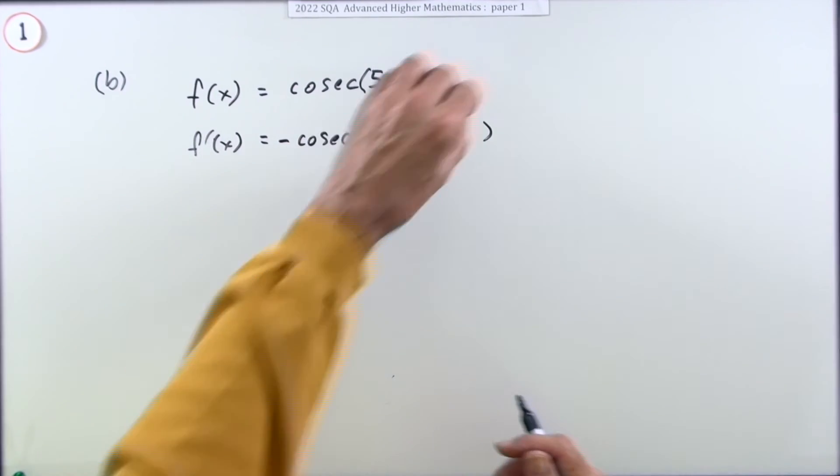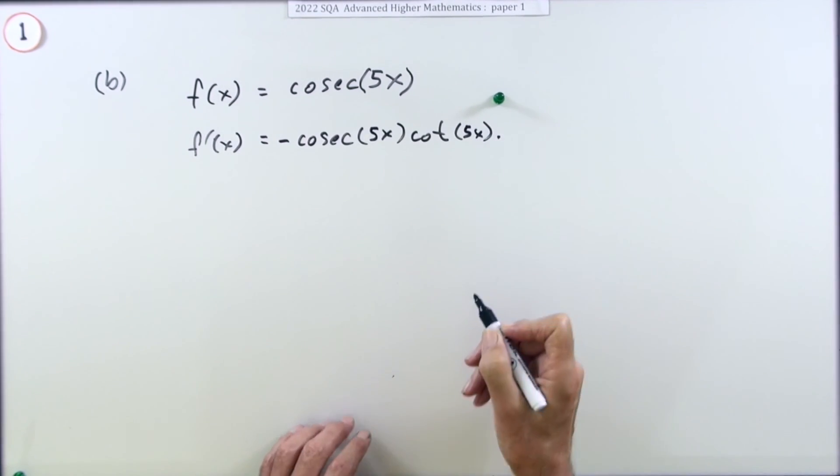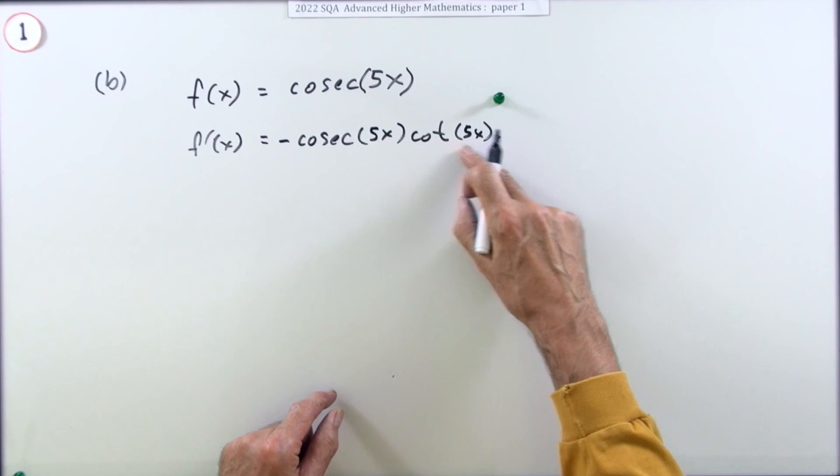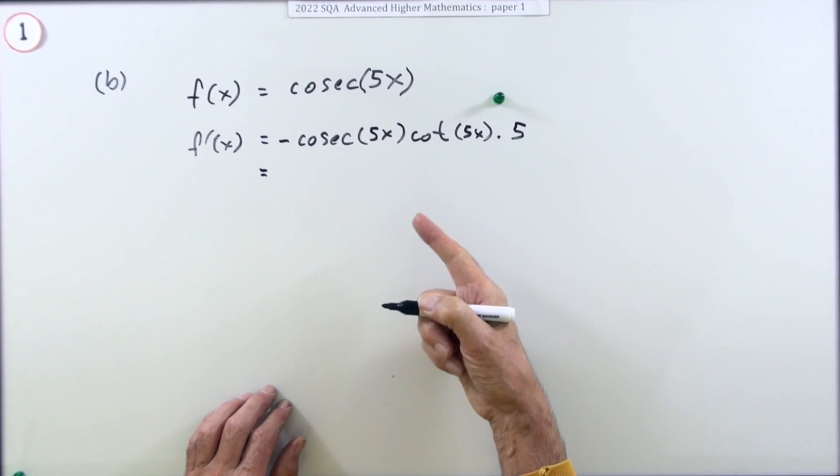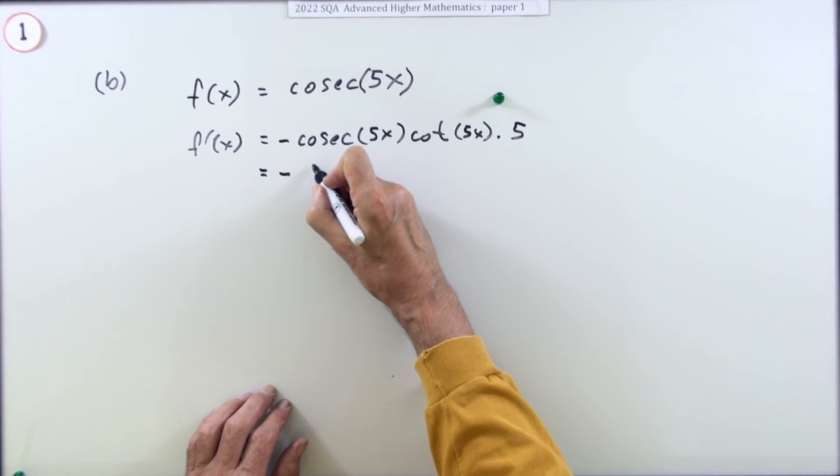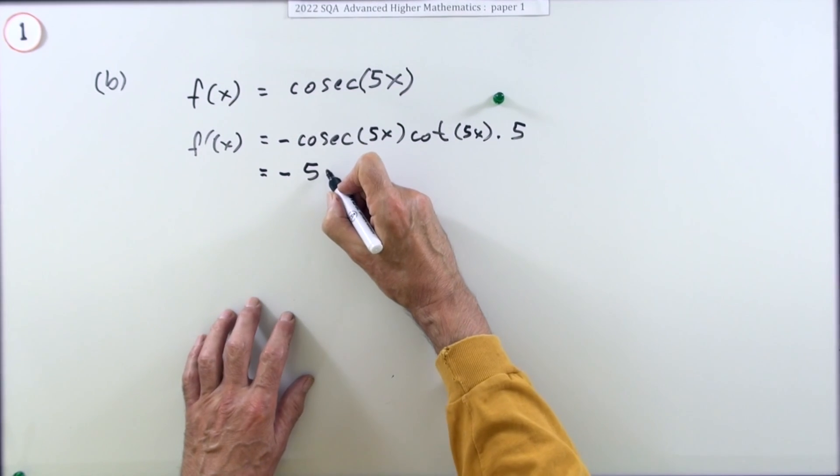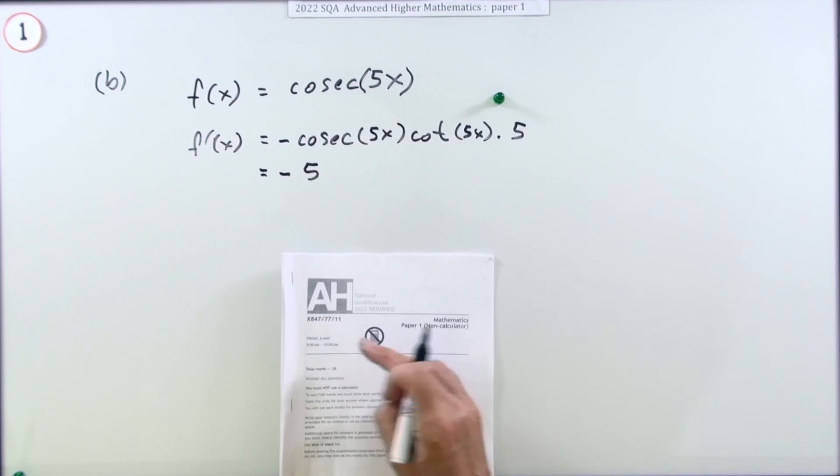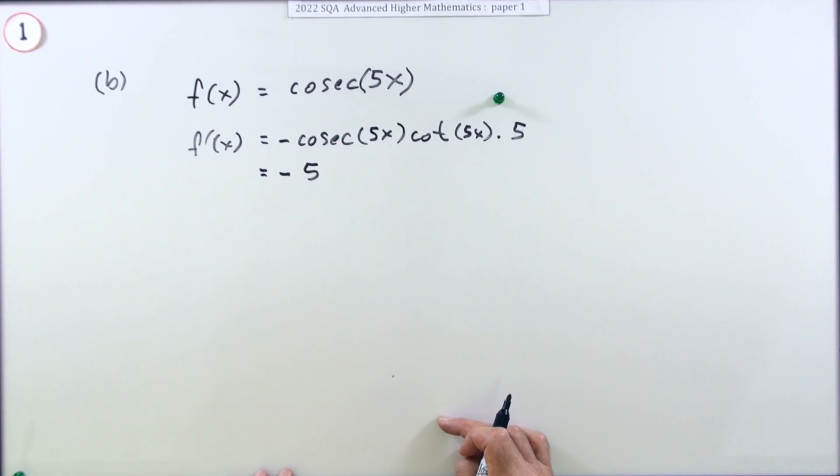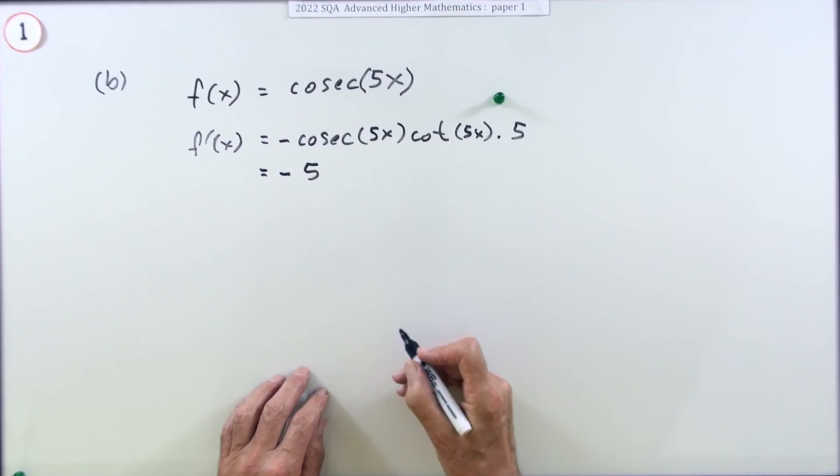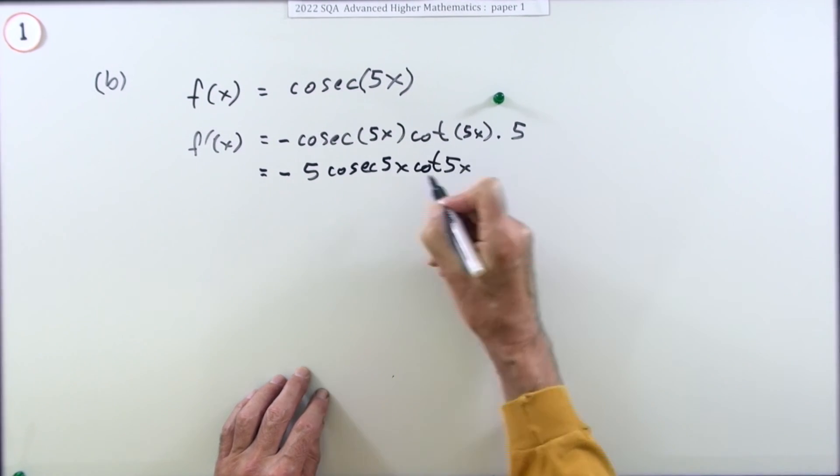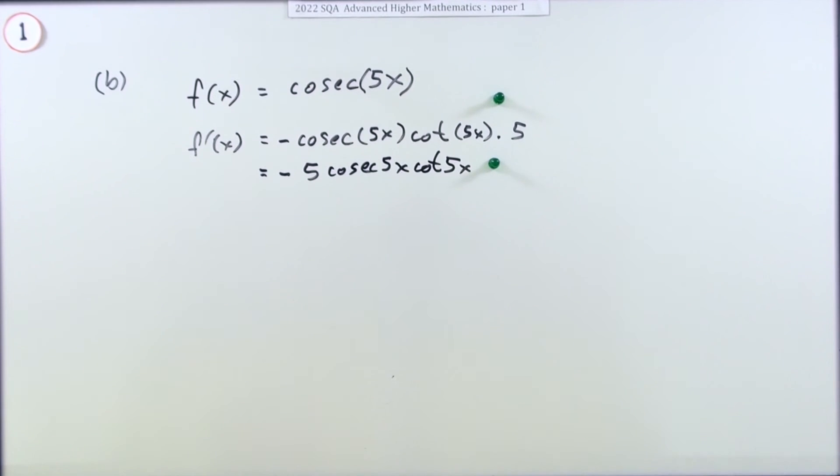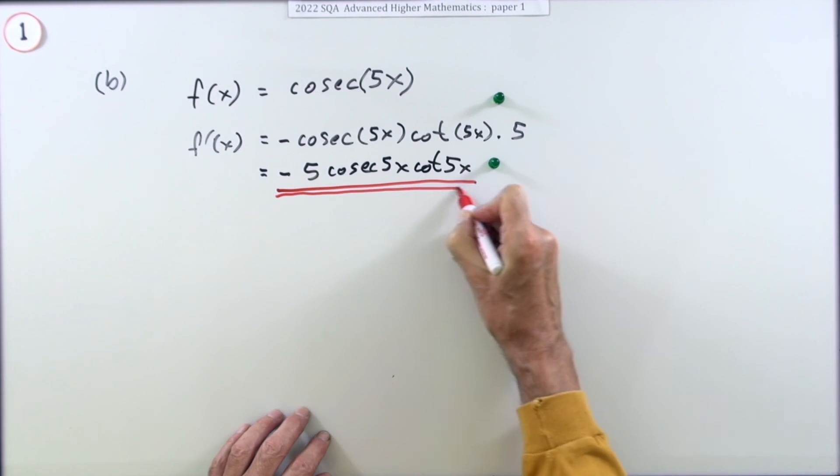So f'(x), the pattern was cosec of whatever goes to negative cosec of whatever cot whatever. I think just for doing that you get a mark. Those were 5x's multiplied by the derivative of the inside which is just 5. So you get another mark for tidying up and putting that 5 to the front. That's a pretty easy question for two marks, when you consider that's about under two minutes per mark. You probably do that in 30 seconds. So negative 5 cosec(5x) cot(5x), and that's that mark.